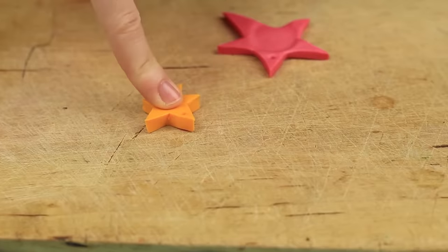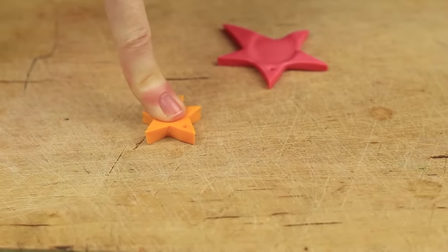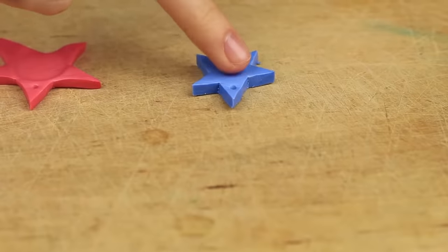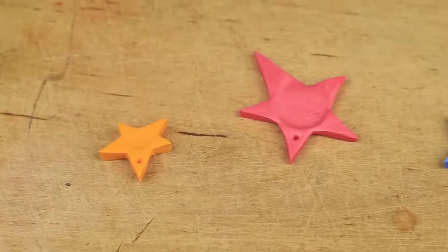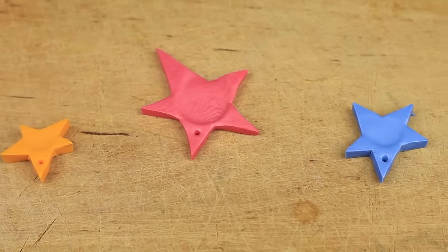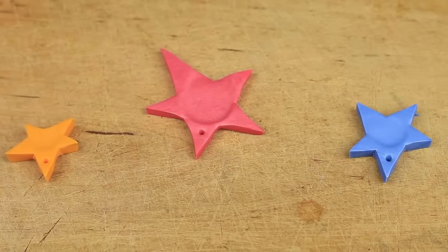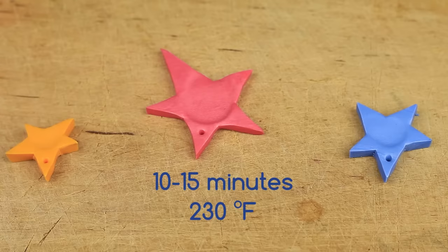Print your little finger on the smallest yellow star. Put a fingerprint with your middle finger on the blue charm. All the stars are ready. You can bake them now. Be careful to check the polymer clay instructions for baking time and temperature. We'll bake the charms at 230 degrees Fahrenheit for 10 to 15 minutes.